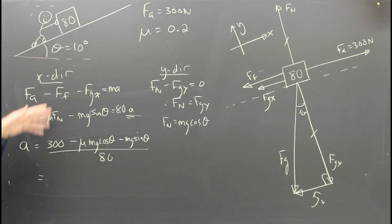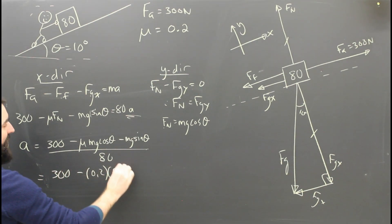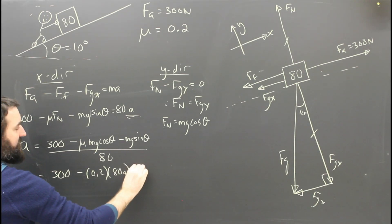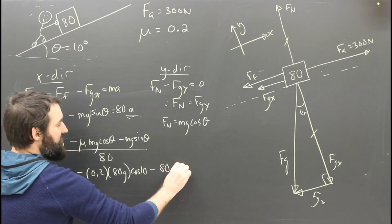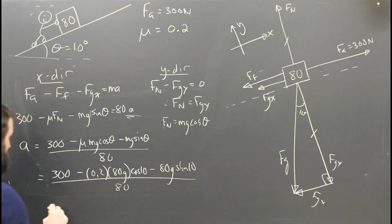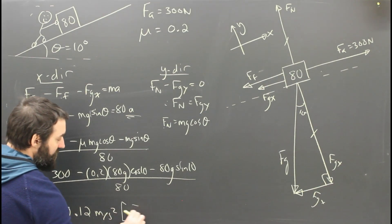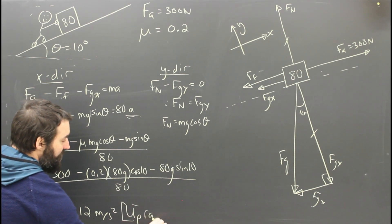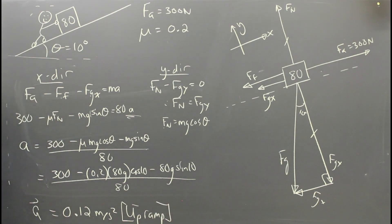And when I shove in all my numbers and I do all the math, well I'll show you that. I get 300 minus 0.2 times 80g times the cosine of 10 minus 80g times the sine of 10, all divided by 80 gives me an answer of 0.118, which I'll call 0.12 meters per second squared. But acceleration is a vector. So let's make sure we have a direction which is up the ramp.